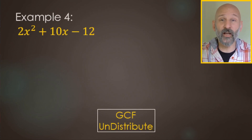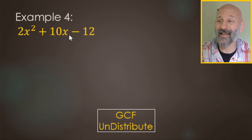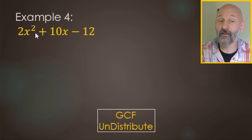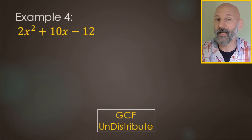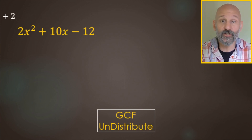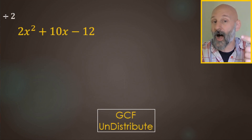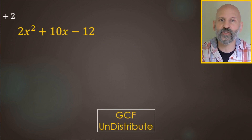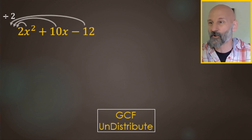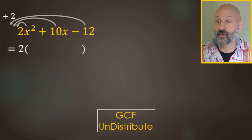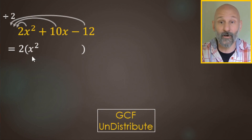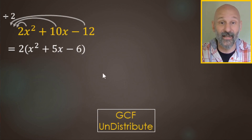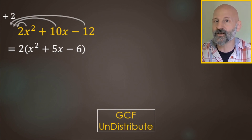Now we're going to switch things up a little. When we factor 2x squared plus 10x minus 12, we don't have 1x squared — we have 2x squared, so a does not equal 1, it equals 2. Notice all terms can be divided by 2, so we're going to undistribute a factor of 2 — that's the greatest common factor or GCF. So our next step looks like 2 times parentheses: 2x squared divided by 2 is x squared, 10x divided by 2 is 5x, and negative 12 divided by 2 is negative 6.